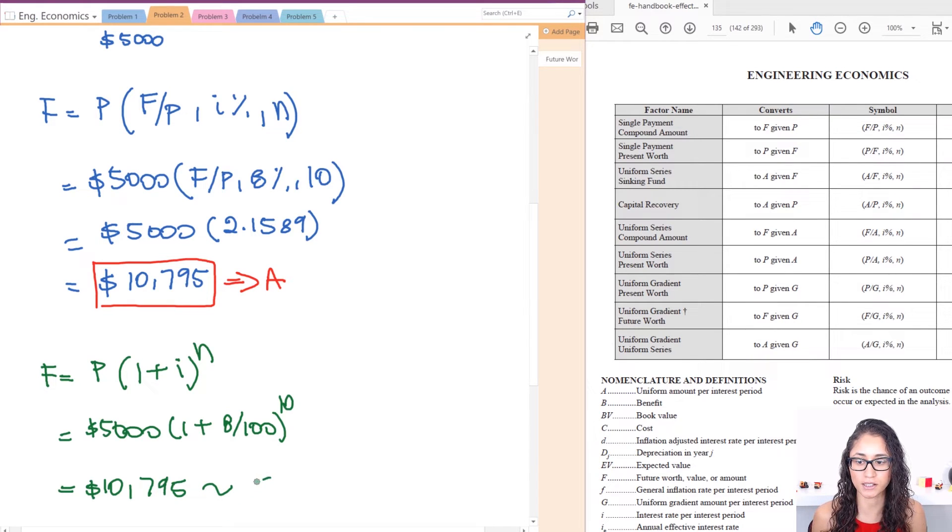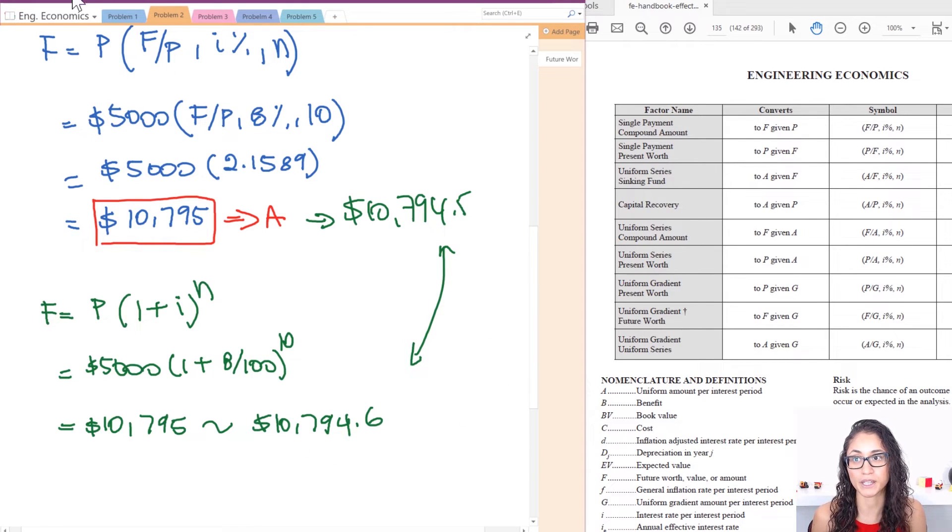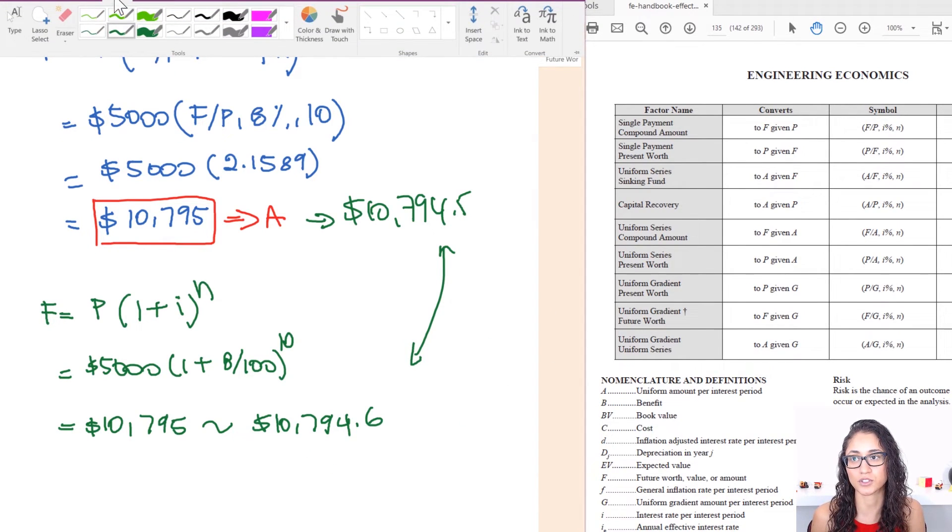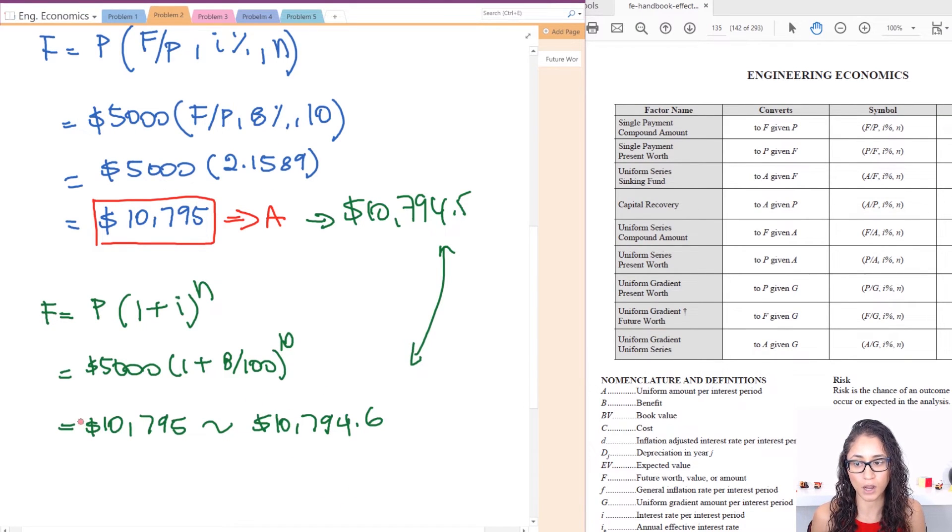This one actually in the calculator was 10,794.6 and then this one was like 10,794.5. So as you can see they're very close and they should be. If not then there's something wrong. But yeah, that's like I said, it's a very easy straightforward problem. We will however in the future cover a little bit more harder problems on this.